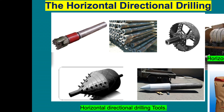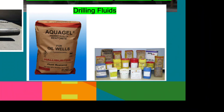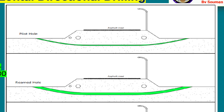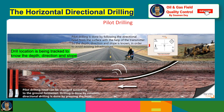Here are some horizontal directional drilling tools and photos for your information, including the mud mixing unit where bentonite and other ingredients are loaded. Here is the schematic diagram of the different stages of HDD. At the beginning, the pilot hole has to be bored. Then the hole diameter is made bigger — 30 to 50 percent of the pipe diameter. This is called the reamed hole. Finally, the pipe is pulled inside the hole.